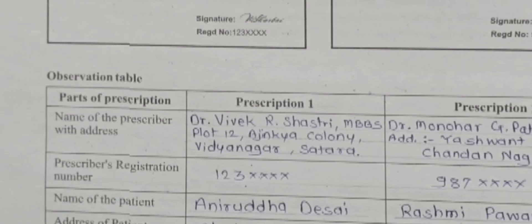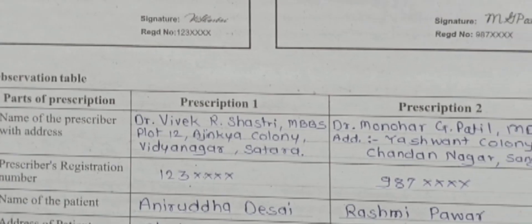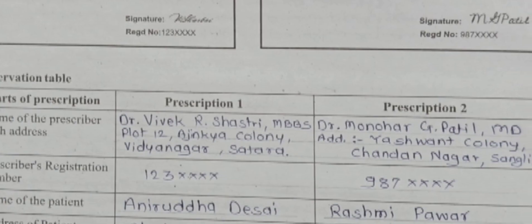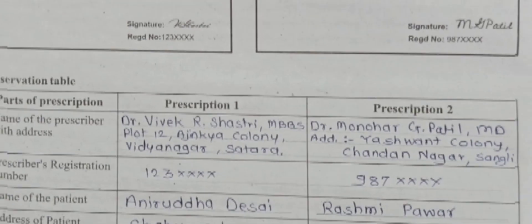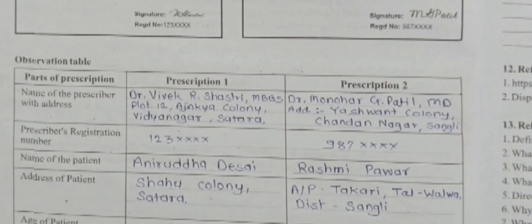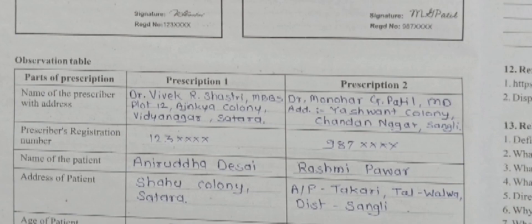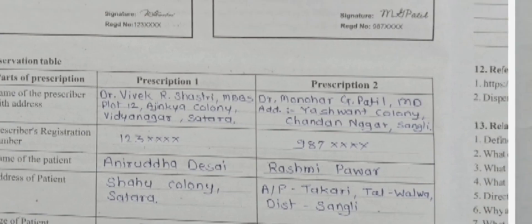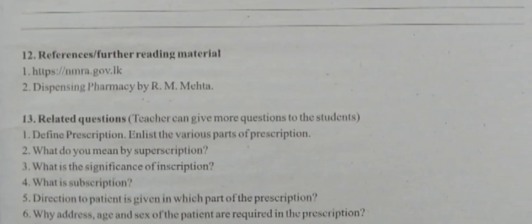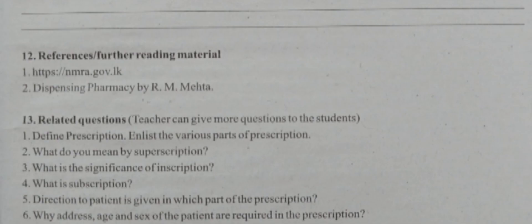There are no refill instructions for prescription two either. That completes the observation table for prescription one and prescription two. Then see what the incorrect steps are — that was activity two — where dummy prescriptions were given and the errors in them were identified.